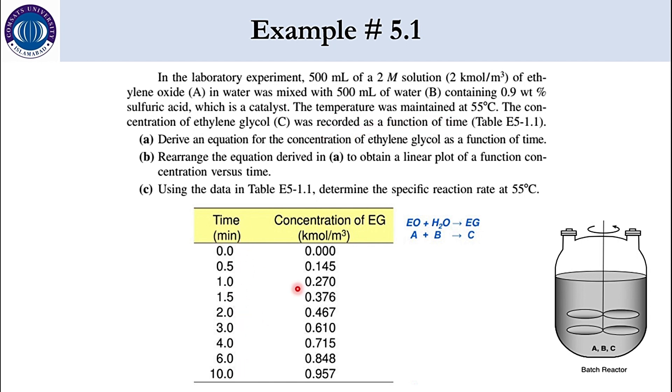And from 0 to 10 minutes the concentration of ethylene glycol was noted and as you can see it is increasing because obviously it's a product so it will generate in the system. Now we have been given with 3 tasks. Number 1 derive an equation for the concentration of ethylene glycol as a function of time. Number 2 once we have derived that equation we have to rearrange it to obtain a linear plot of function of concentration versus time. And finally we have to determine the specific reaction rate constant.